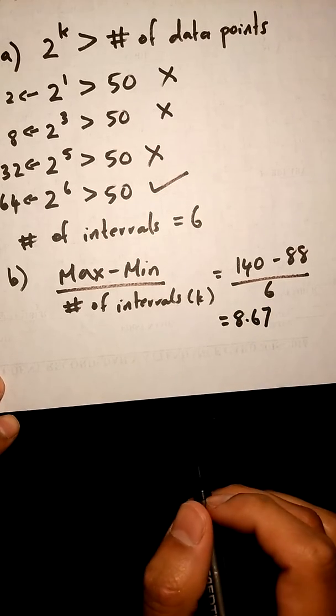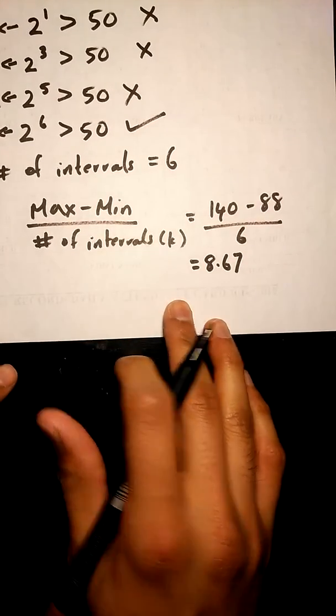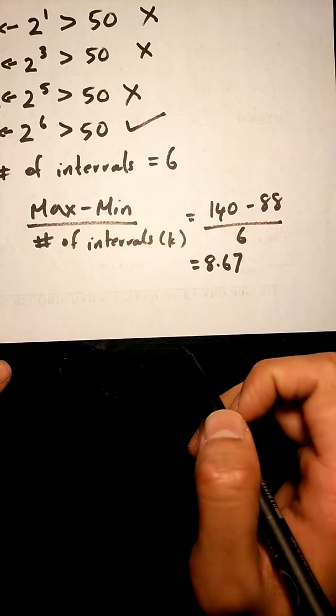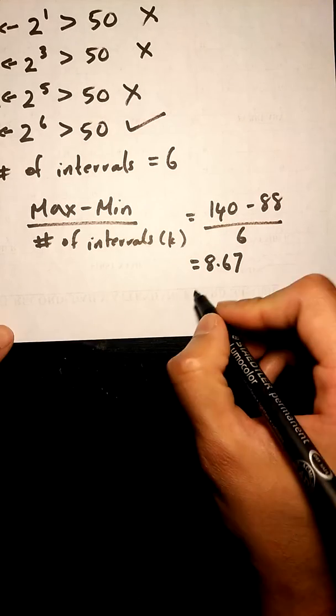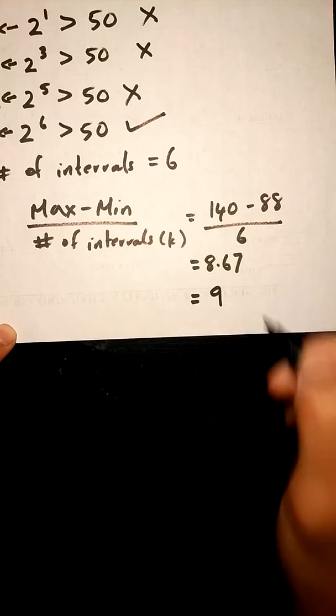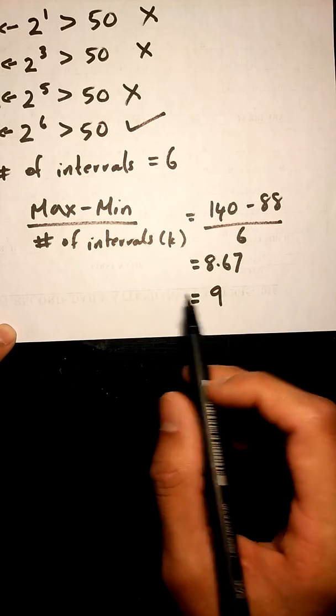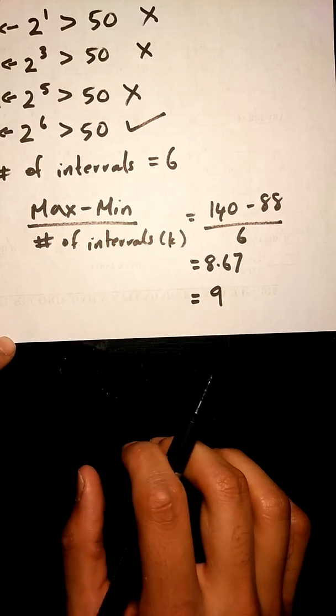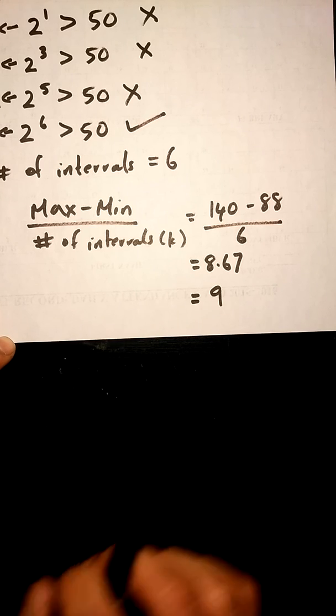8.67, and the important thing we got to remember is that we always have to round this number up. So in this case, I'm going to round it up to 9. You can take a look at my next video to see a lot of examples on this topic so you understand how to round numbers properly.